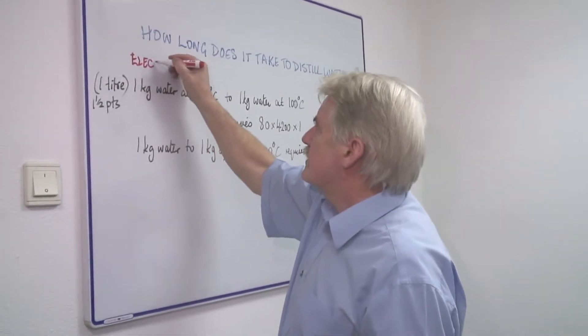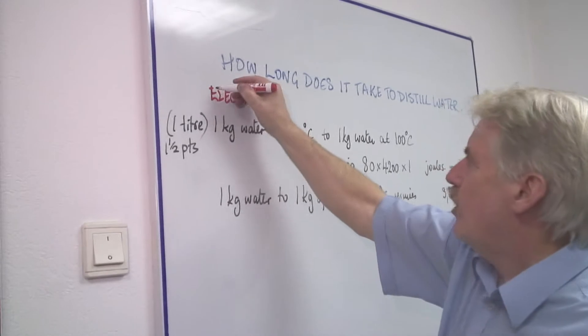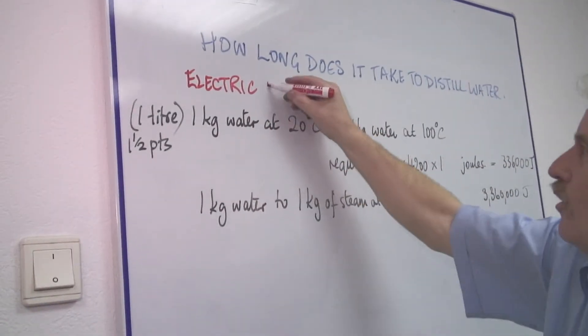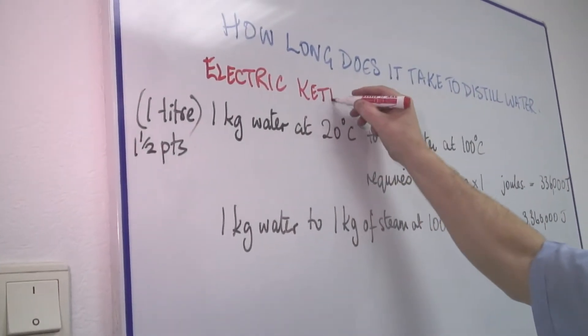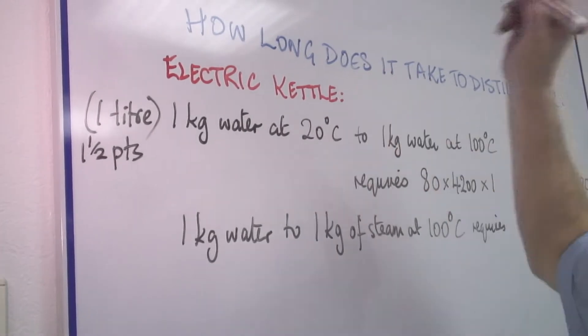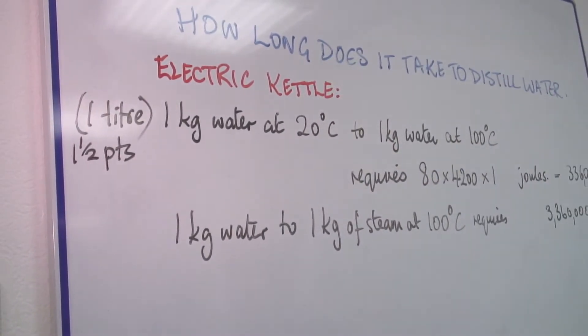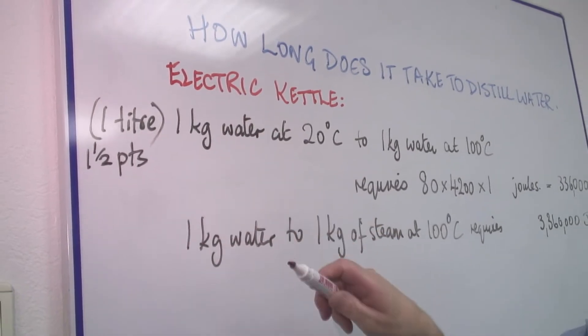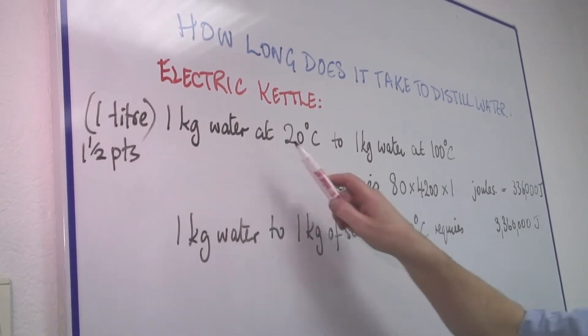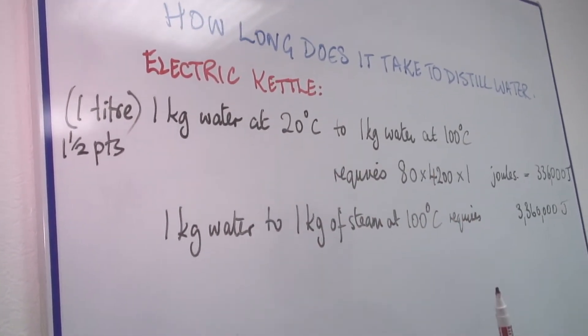And in fact, although this looks quite complicated and mathematical, all it is is about an electric kettle, something household like that. One liter, or one and a half pints, is the normal capacity of an electric kettle. And 20 degrees Celsius is normal room temperature.